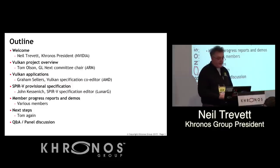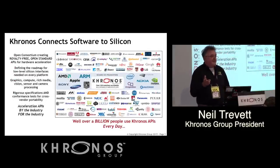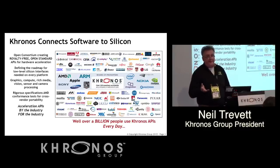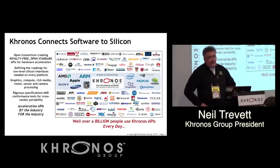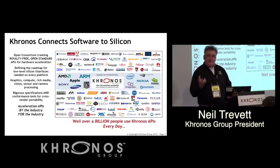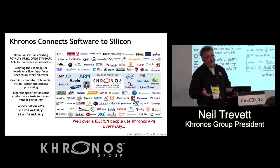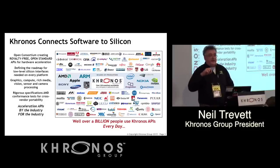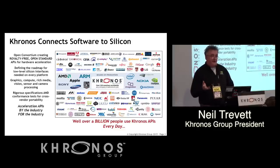Hopefully you'll walk out of here fully informed as to the state of the art of Vulkan. Khronos is an open standards organization — any company is welcome to join. We focus on making open standard APIs that connect developers to silicon acceleration like graphics, compute, sensor processing, and vision processing. We have a quorum of the industry: not just hardware vendors and platform vendors, but increasingly developers and game engine developers are coming to Khronos, leaning forward as we design these new APIs.